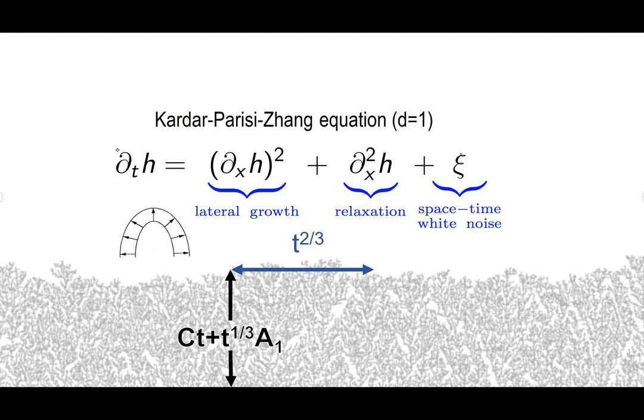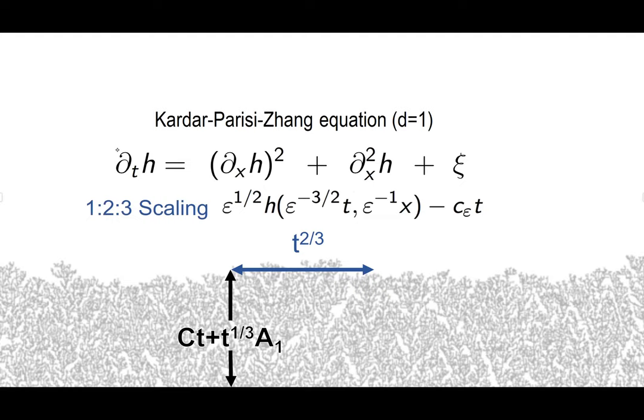The fluctuations live on a lateral scale of size T to the two-thirds. That lateral scale means that's the scale at which there are non-trivial correlations. If you go shorter than that scale, all you see is a Brownian motion. If you go much longer than that scale, it completely decorrelates. The T to the one-third height fluctuations and T to the two-thirds lateral scale can be rephrased as the 1-2-3 scaling.